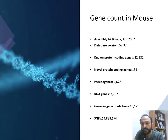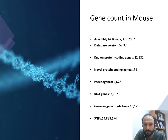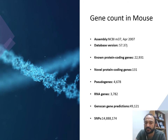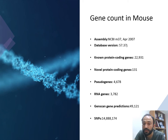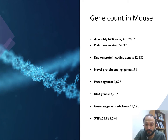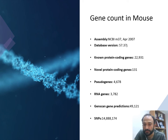Looking at the gene count, similar to humans, the mouse has 22,931 protein-coding genes — almost the same number as human, with only a slight difference. The database and NCBI assembly version are noted here. The novel protein-coding genes specific to mouse were only 131. Pseudogenes were 4,678, RNA genes were 3,782, and gene scan and SNP predictions are also listed.